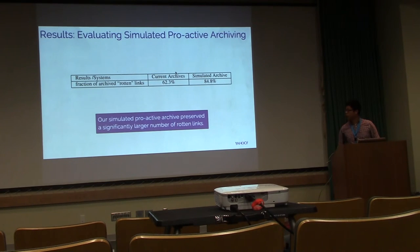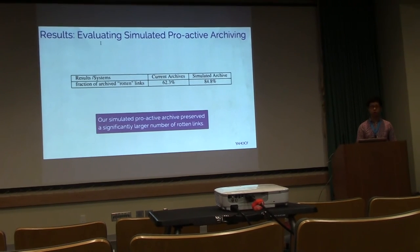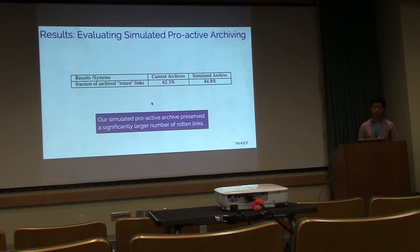We also did another evaluation using the outputs of the ranking provided by our learned predictor. Based on current archival solutions, only 60% of the links are archived for those rotten links. But based on our predictor, by archiving the same number of links, we will be able to archive a significantly larger number.